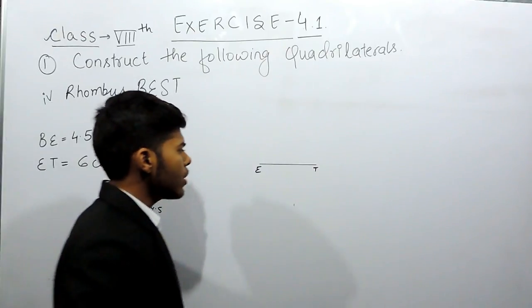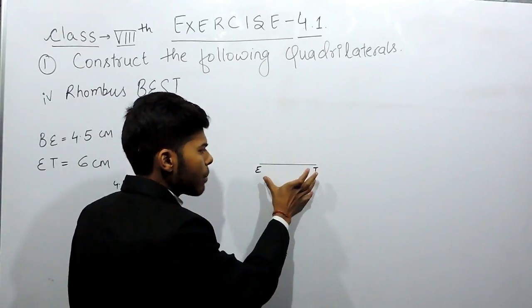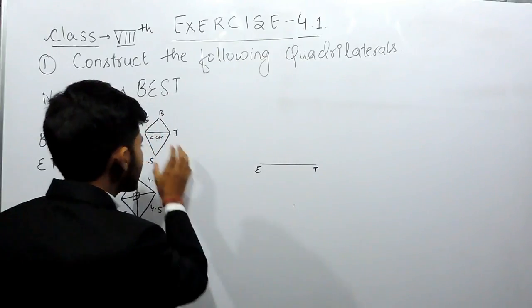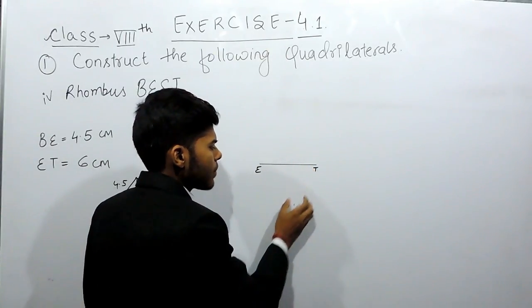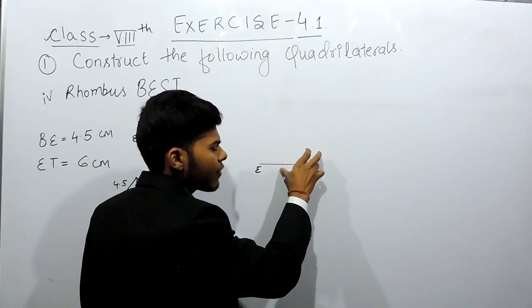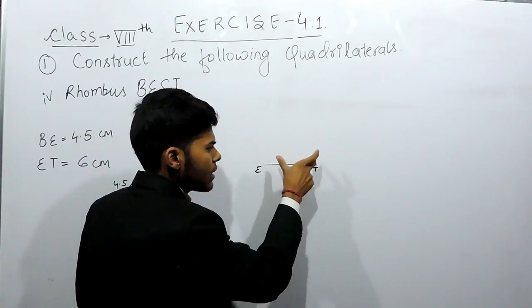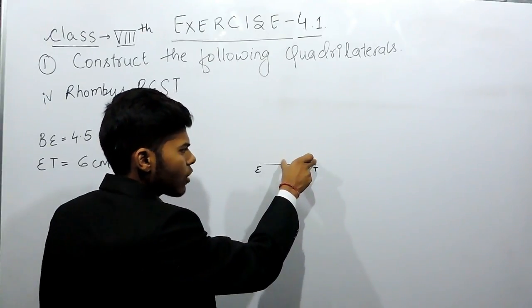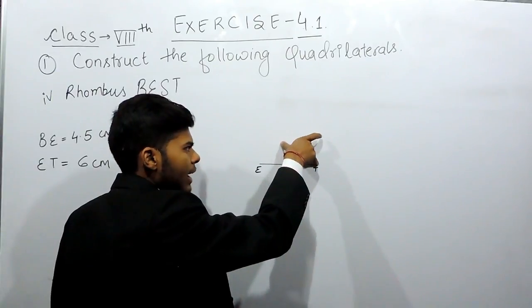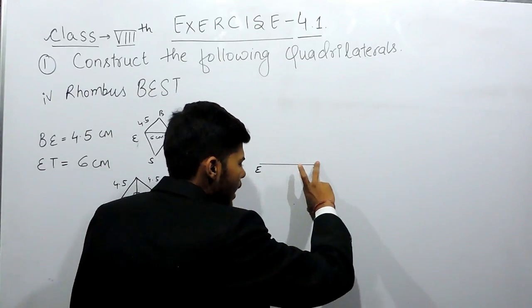To draw a perpendicular bisector, open your compass at 6 cm and shorten it out. By any guesses, supposedly take the compass to be more than half of this line segment. Supposingly I took the compass like of this much length. Now with this point I will make an arc like this and I will cut an arc like this.